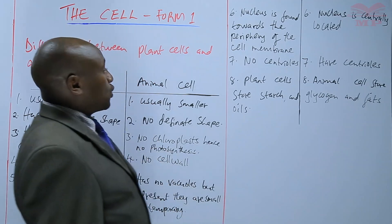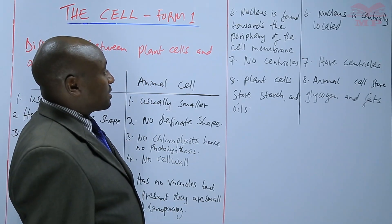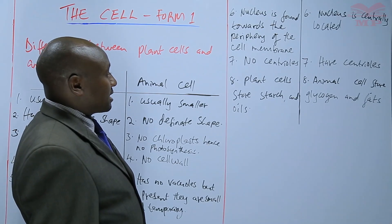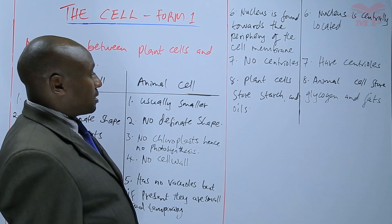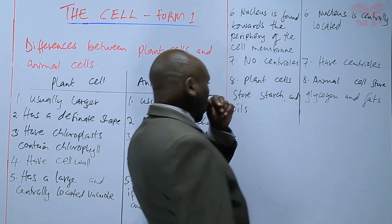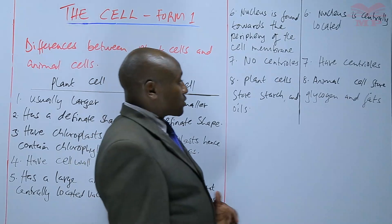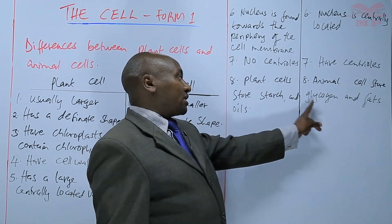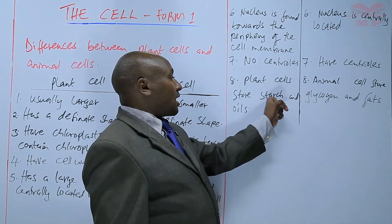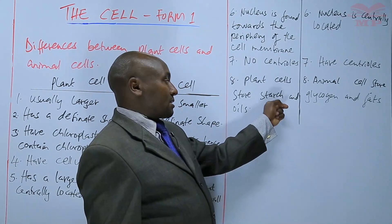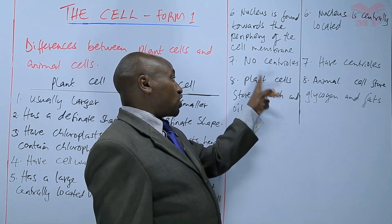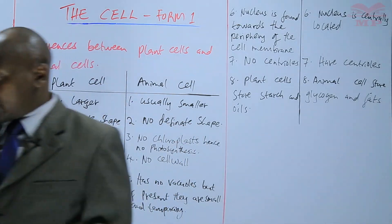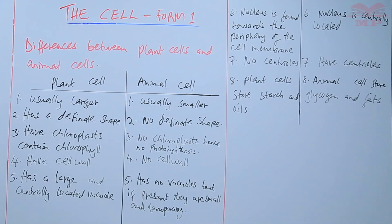Number seven: there are no centrioles in plant cells, but we have centrioles in animal cells. Plant cells store their food in the form of starch and oils, whereas animal cells store glycogen and fats. Glycogen is a carbohydrate stored in animal cells; starch is a carbohydrate stored in plant cells. In addition, plant cells have oils but animal cells have fats. Those are the differences that exist.